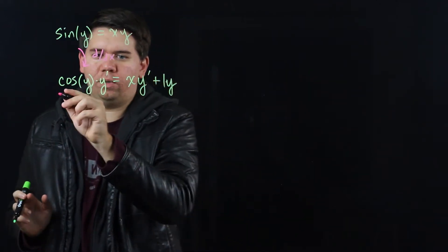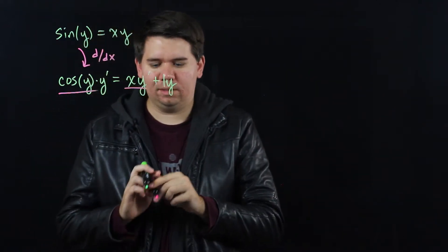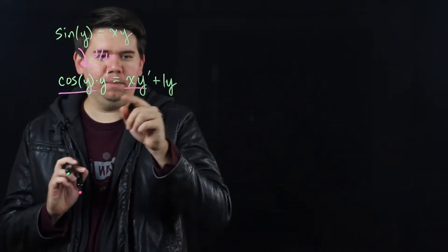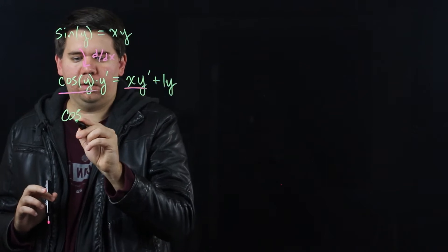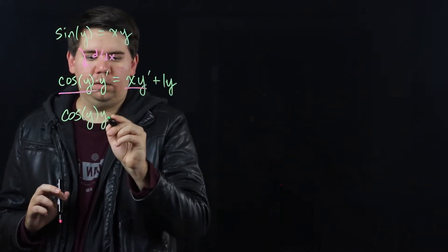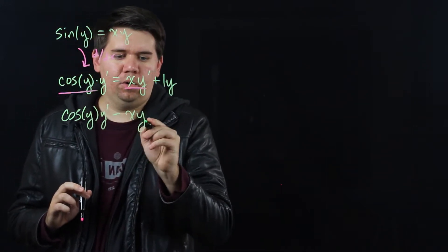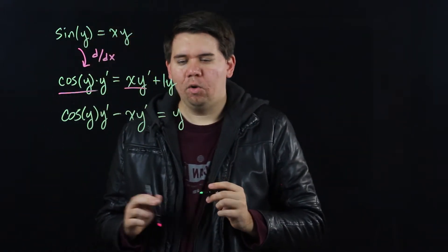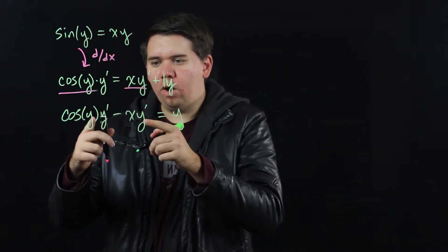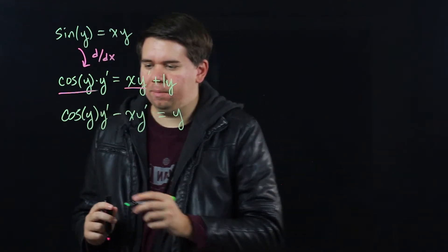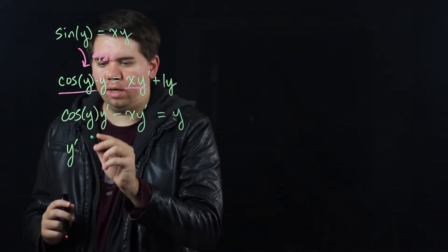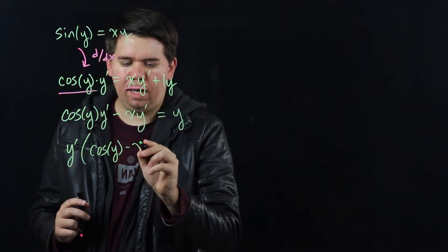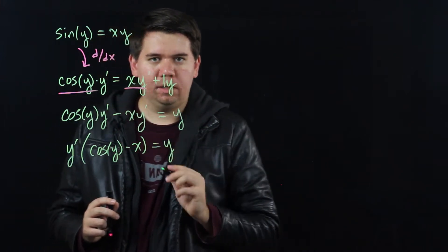Next step, let's get all those y prime pieces on the same side. So that'll give me cosine of y, y prime minus xy prime, leaving me something equal to y. Why did I do that? Well now that all the pieces on the left hand side have a y prime, I can factor out that y prime. Give me y prime times cosine of y minus x equals y.